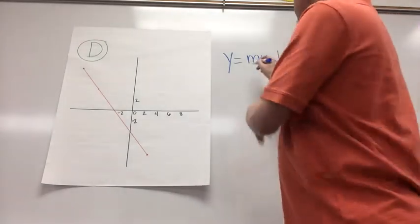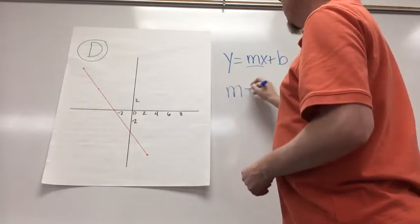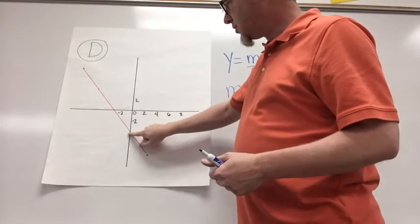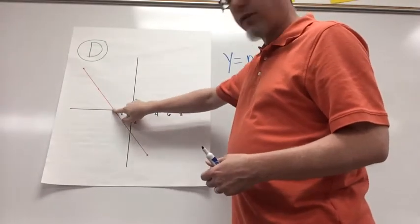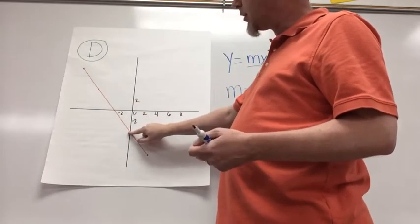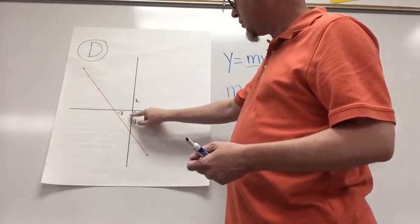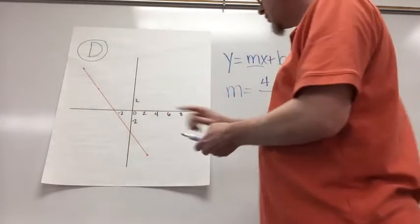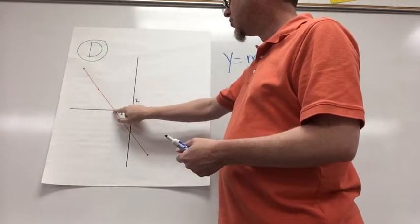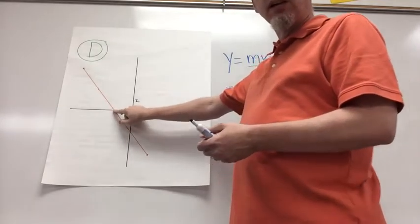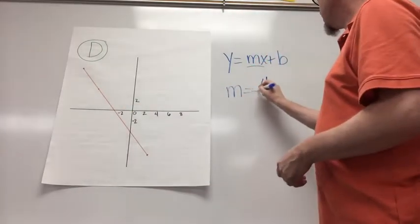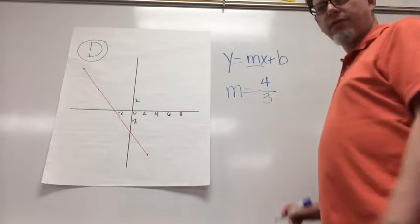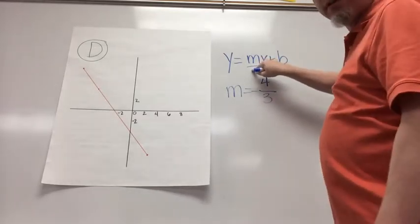So the first thing we need to do is find our slope. Let's figure out what m equals. I'm going to choose this point to get to this point, and we know that we do rise over run. I'm going to go up 1, 2, 3, 4, so my rise is 4. My run is 1, 2, 3, but since I'm going to the left, that run is negative 3, so my slope is negative 4 over 3. That's the first part of our equation.